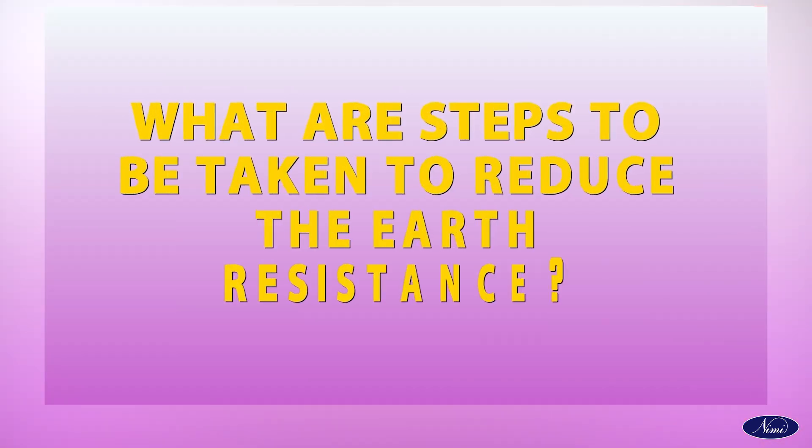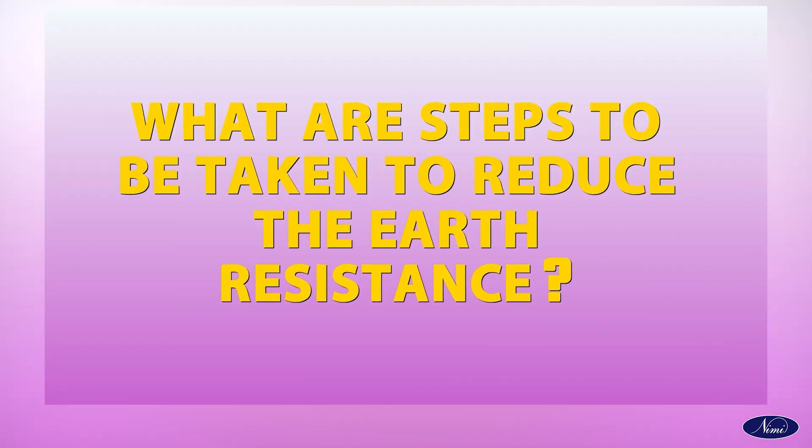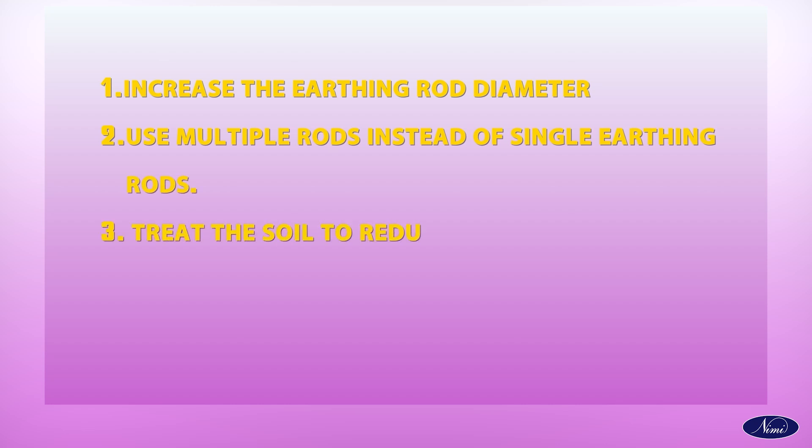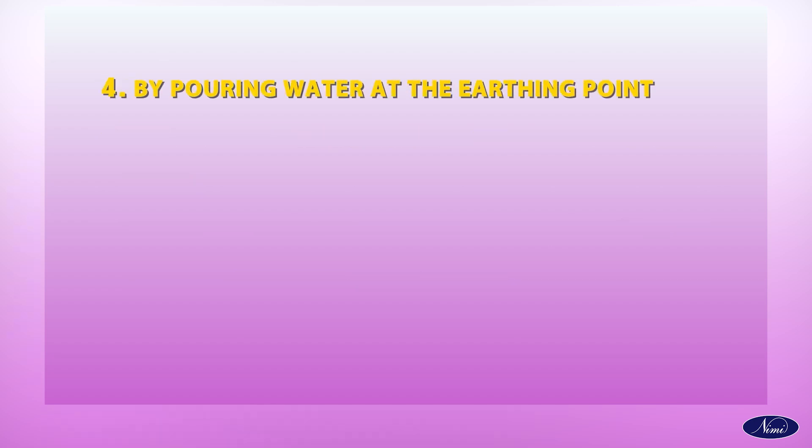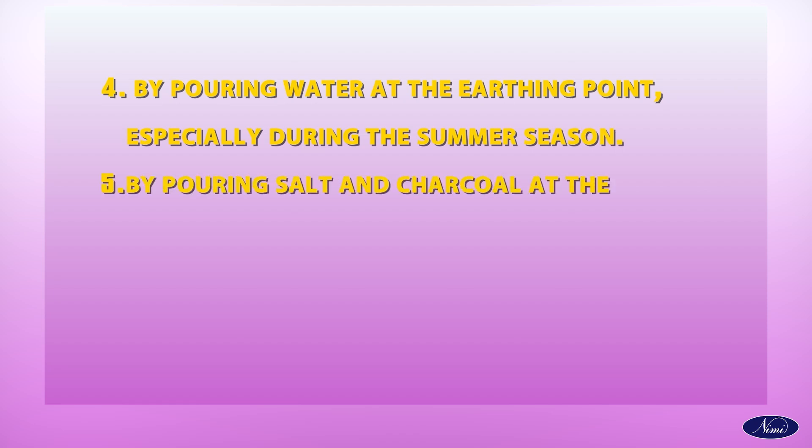What are steps to be taken to reduce earth resistance? Increase the earthing rod diameter. Use multiple rods instead of single earthing rods. Treat the soil to reduce its resistivity by adding chemical compounds. By pouring water at the earthing point, especially during the summer season. By pouring salt and charcoal at the ratio of 1 is to 5. Soldering or welding the nuts and bolts.